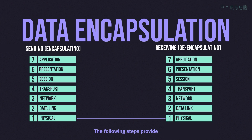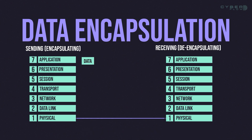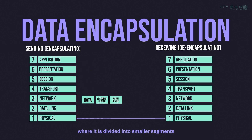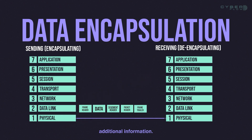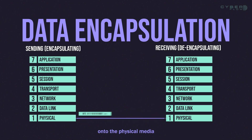The following steps provide an overview of the communication process from a source to a destination. Step 1: Data is created at the application layer of the originating source device. Step 2: The data travels down the protocol stack of the source device, where it is divided into smaller segments and encapsulated with additional information. Step 3: The data is transmitted onto the physical media at the network access layer of the source device's protocol stack.